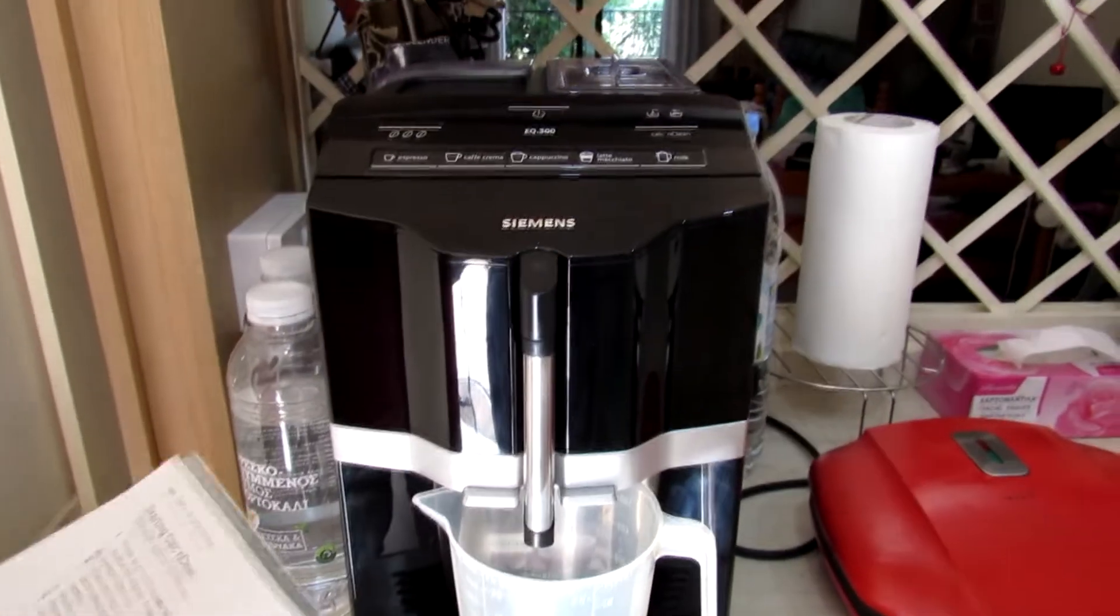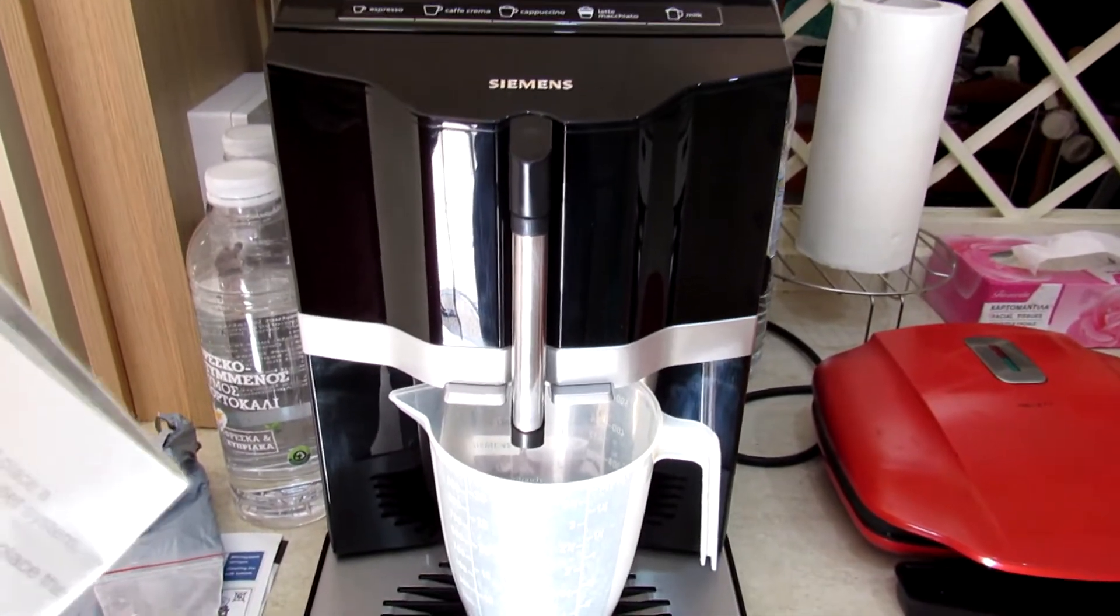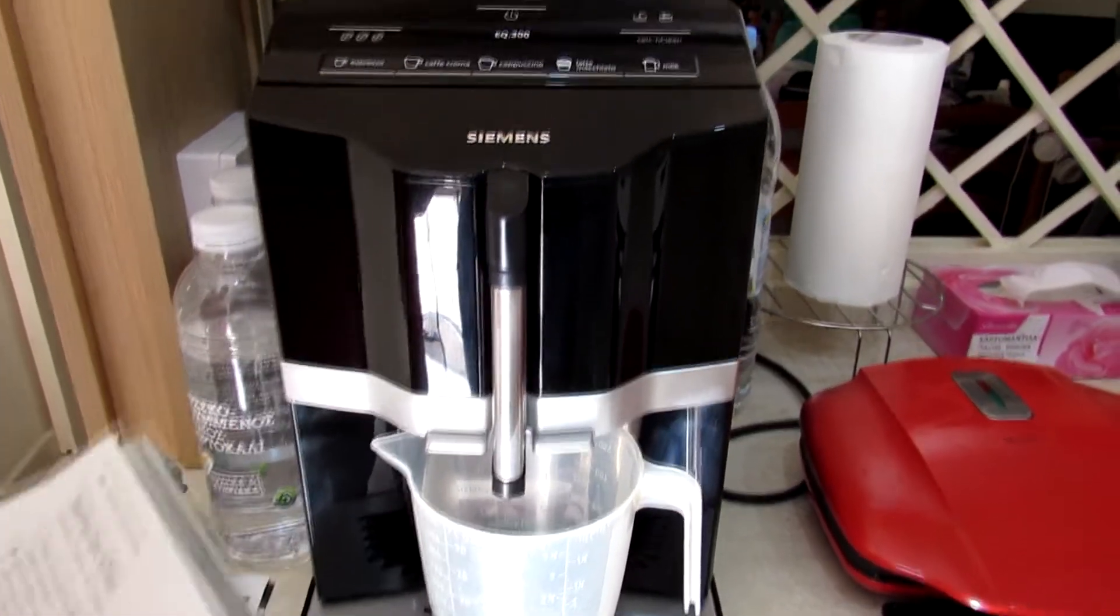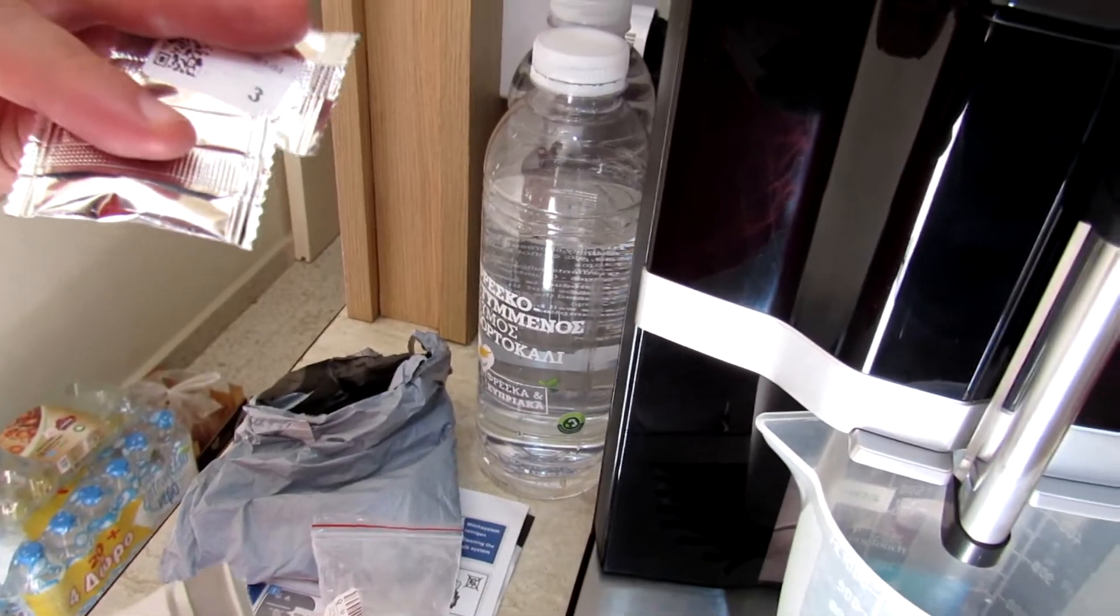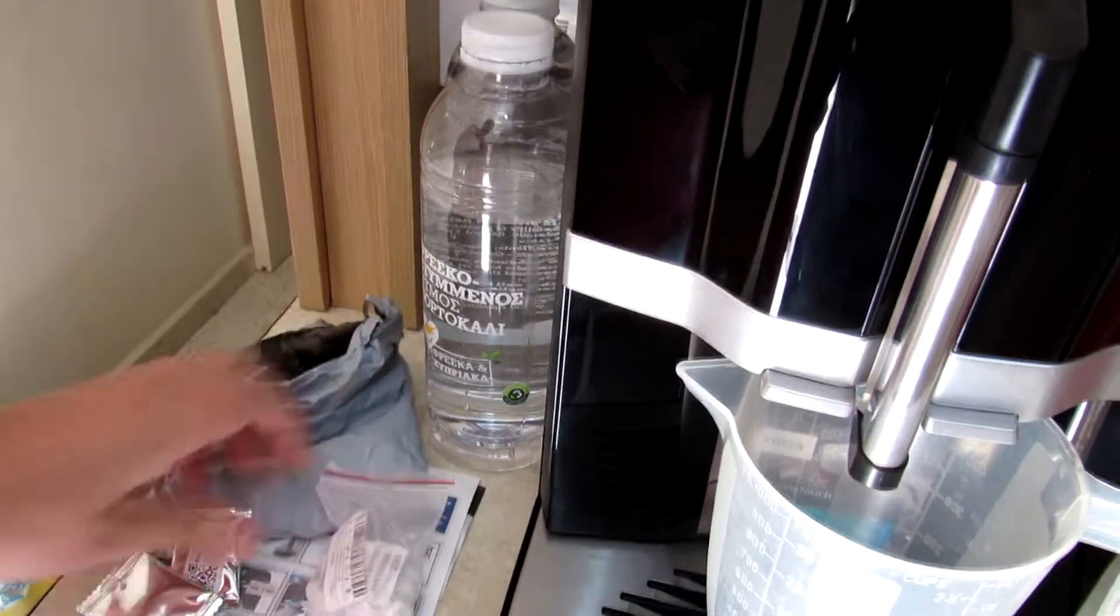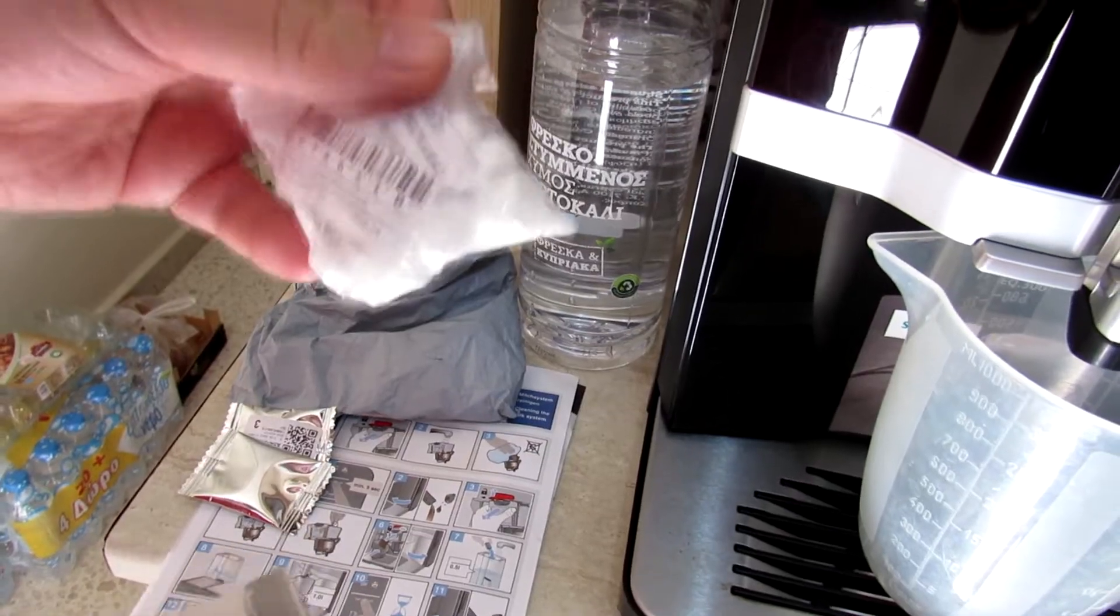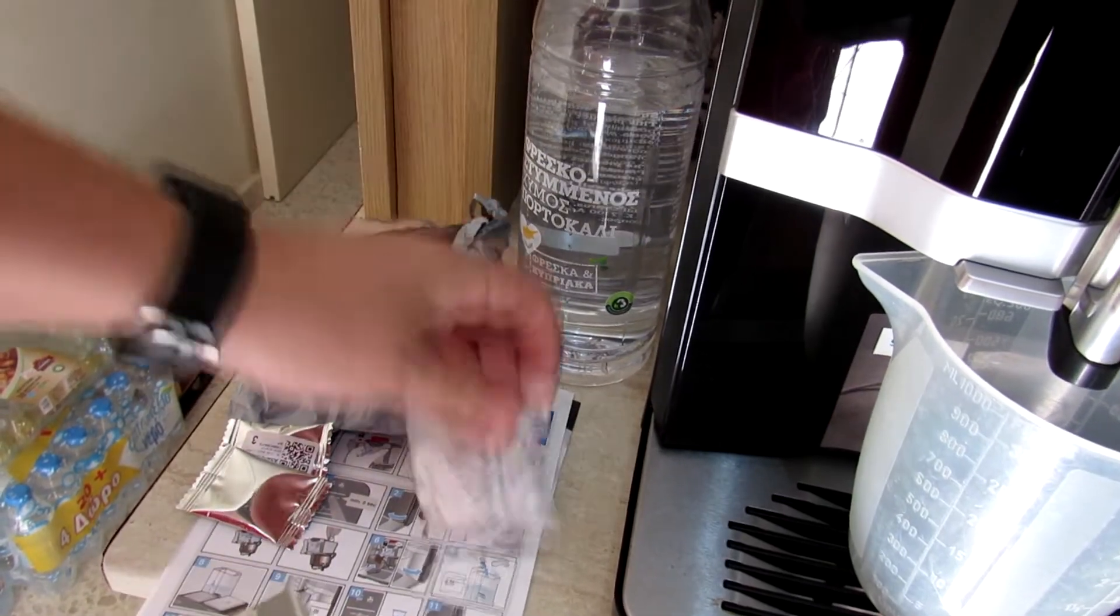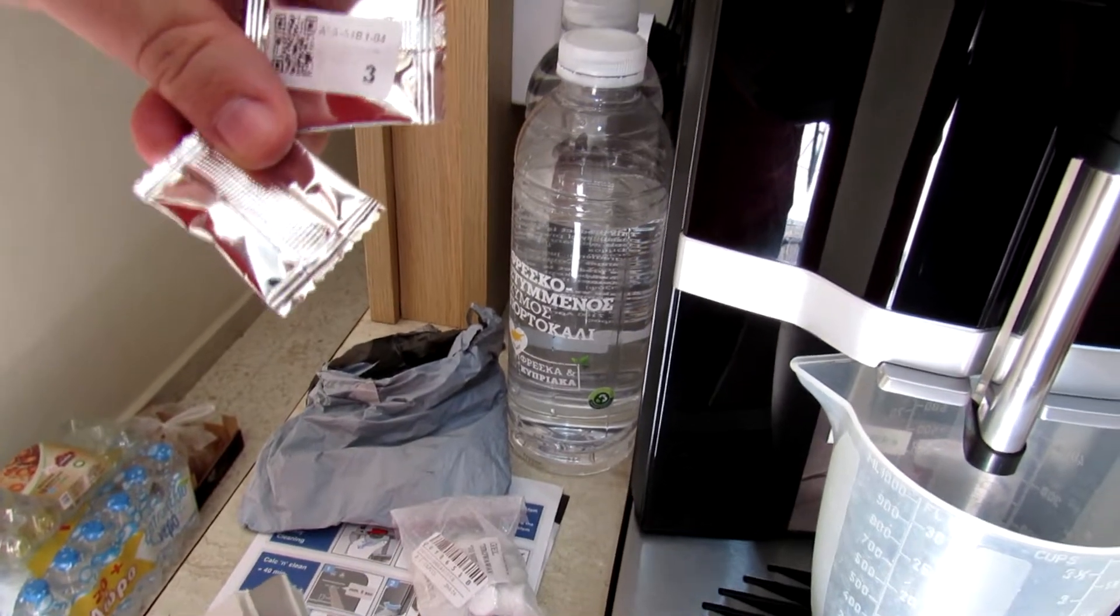How to descale and clean this machine without overpriced Siemens pills? It's easy. We bought pills from Aliexpress, it's 2 euros and this one is 2 euros too. This is for how to clean a brewing unit. This is the descaling agent, we must put it into water.